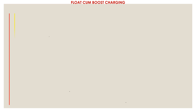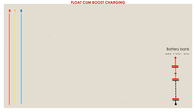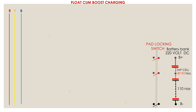In each substation, a float and boost charger is being used. This battery bank is of 220 volts, consisting of 110 numbers of battery cells with tap cells at 92 numbers. This is a padlock switch. The switch is made off when the bank requires maintenance. During the switch-off condition, the external load is fed through the float charger only.